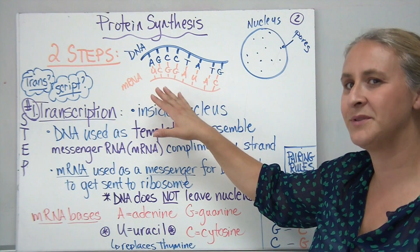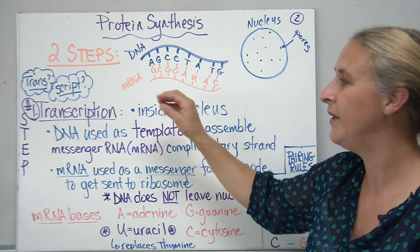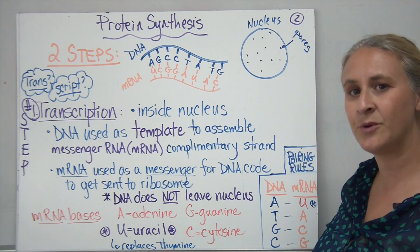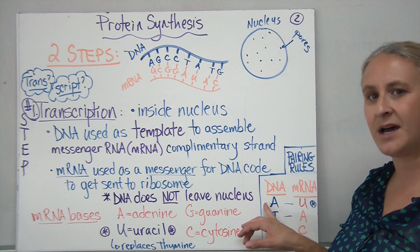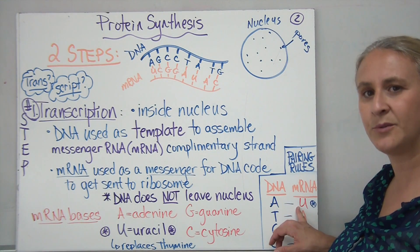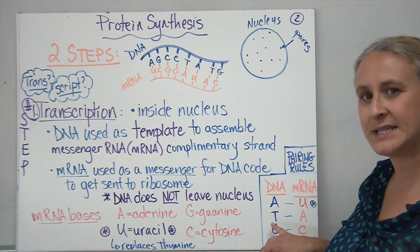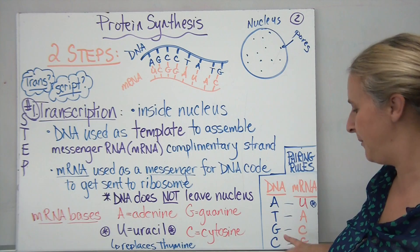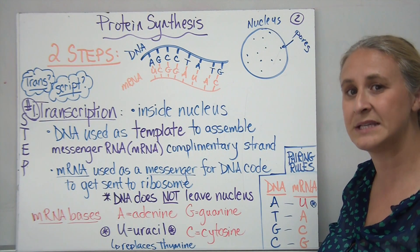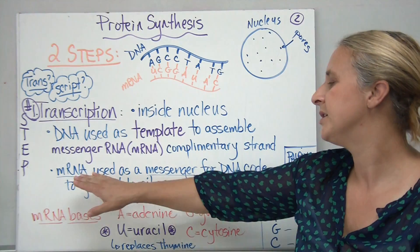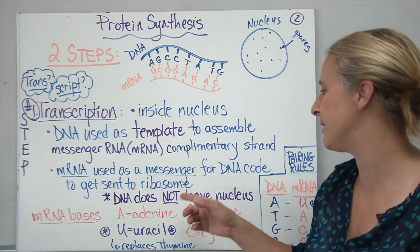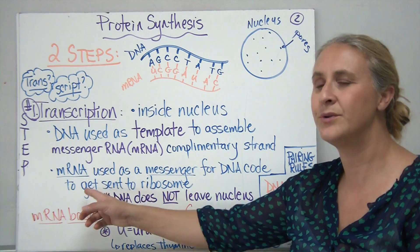We call it a complementary strand because it's built using the same pairing rules as DNA — A pairs with T, C pairs with G. Messenger RNA pairs in a very similar way. If there's an A on the DNA side, the opposite base on the messenger RNA would be uracil, abbreviated U. If the DNA has a T, the messenger RNA assembles an A. A G pairs with a C and a C pairs with a G. The main difference is that messenger RNA has a U in place of T. The messenger RNA acts as a messenger, sending the DNA code's information to the ribosome.